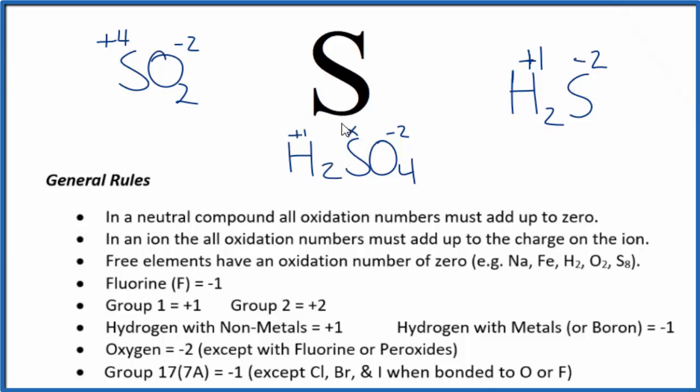So the sulfur has to be positive six. To recap, sulfur just by itself or octosulfur has an oxidation number of zero. But when sulfur is bonded to other elements, it can take on different oxidation states: minus two, plus four, plus six, and several other states. By looking at what the sulfur atom is bonded to, we can figure out its oxidation number.